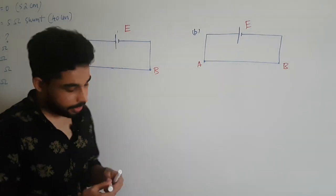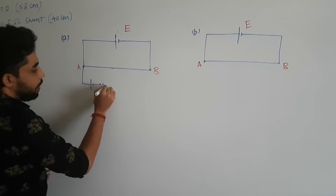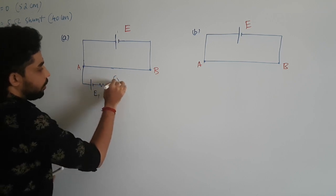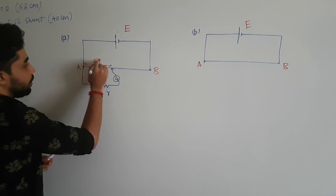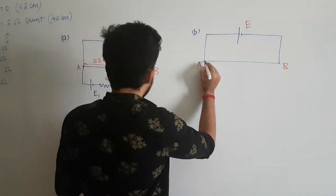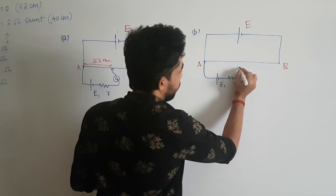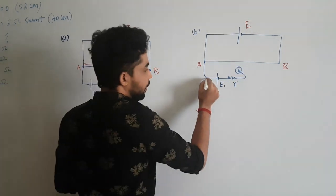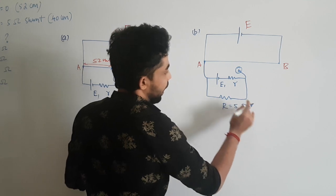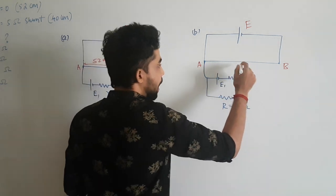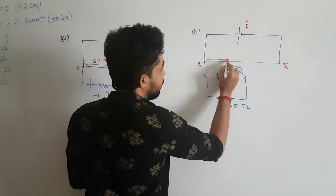Here I have drawn two potentiometers. In the first case, this is connected across a cell — let's take the EMF to be e1 and it has some internal resistance, I'll call it small r. It is passing through a galvanometer and its balancing point is found to be at 52 centimeters. For the second case, the same setup is connected to the cell of EMF e1 and internal resistance r, through a galvanometer, but this time they have connected a shunt resistor of 5 ohm in parallel across the cell. The balancing point is now 40 centimeters instead of 52.